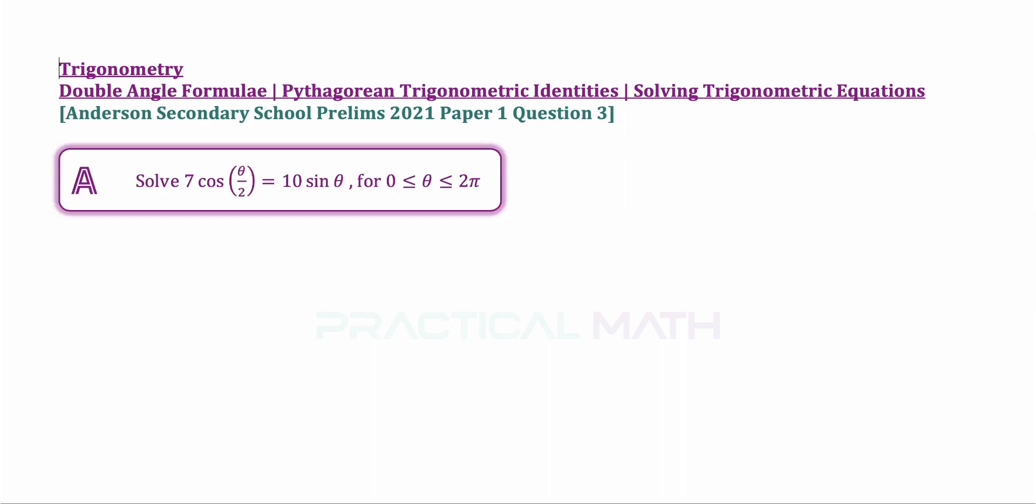In part A of this question, solve 7 cosine theta over 2 equals 10 sine theta for the range of theta from 0 to 2π inclusive.